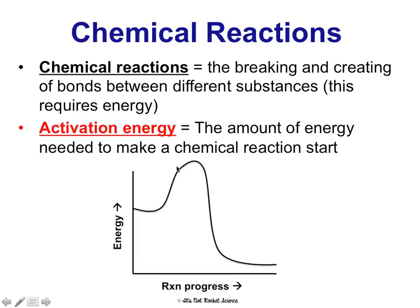What we have here is an energy diagram of a chemical reaction. On the x-axis, it shows reaction progress, or it may show time — what's happening over time — and on the y-axis it shows amount of energy. We're starting with a certain amount of energy, that energy is raised, and then we end with a different amount of energy. This right here is the activation energy — the amount of energy that has to be inputted to get the whole reaction going.